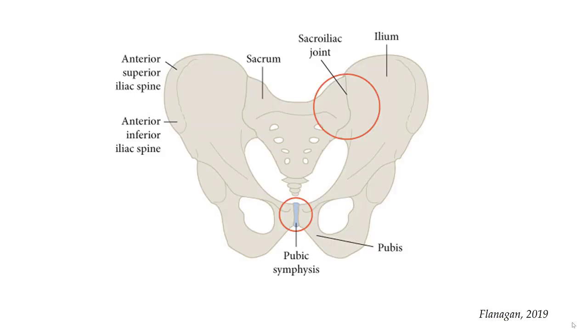The SI joint is a complicated joint. Anteriorly, it is an atypical synovial joint. Posteriorly, it is a syndesmotic joint.